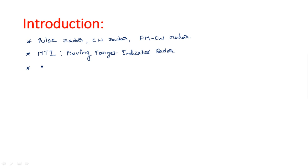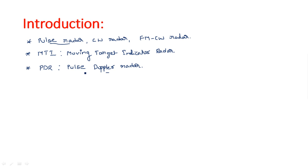Another radar system I am going to introduce is pulse Doppler radar, abbreviated PDR. The name combines 'pulse' and 'Doppler' — earlier we studied pulse radar, and now this is pulse Doppler radar. Can you imagine what the difference between the two could be? If you at least think about it before going into the topic, you will have some idea and can even draw the block diagrams on your own.